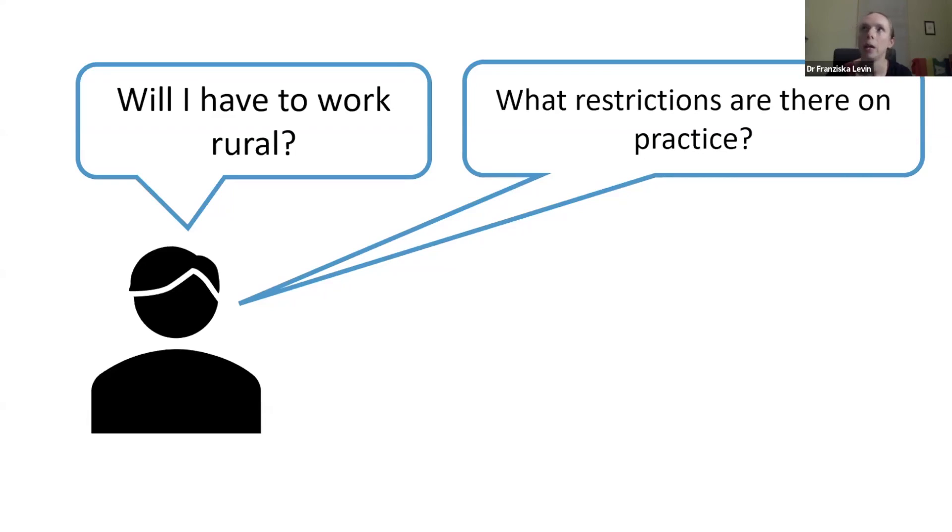The other thing to remember is that the map that Anthony was just showing changes every year. Every year in July, they re-look at which areas have a shortage of GPs and where they need GPs. You've seen on that map some of the areas have small pockets, let's say very close to the Melbourne CBD, where there's a shortage, but that might change in July. Absolutely. But if you are working somewhere...